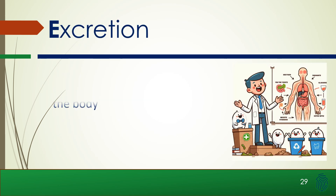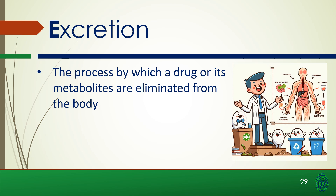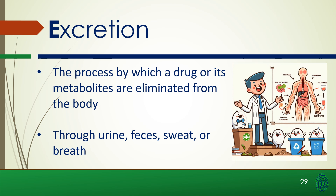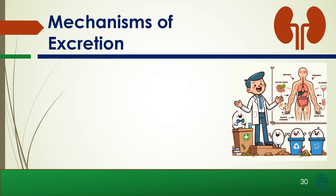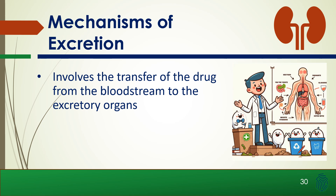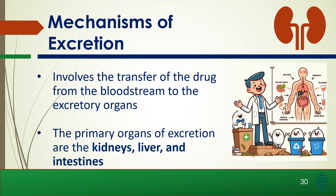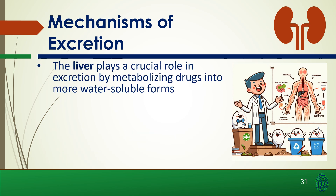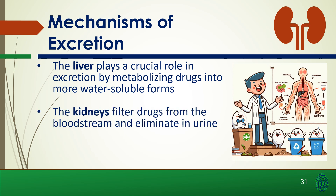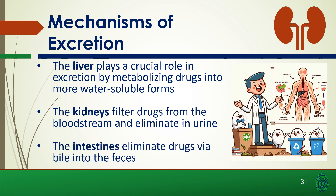Excretion is the process by which a drug or its metabolites are eliminated from the body — often through feces, urine, sweat, or breath. The primary organs of excretion are the kidneys, liver, and intestines. The liver plays a crucial role by metabolizing drugs into more water-soluble forms, the kidneys filter these drugs from the bloodstream and eliminate them in urine, and the intestines eliminate drugs via bile into the feces.